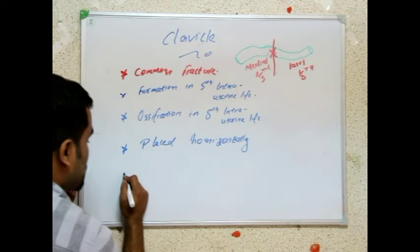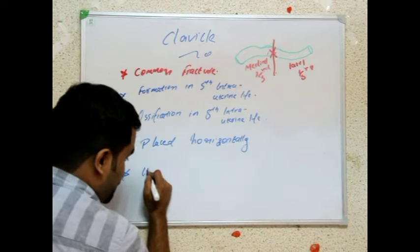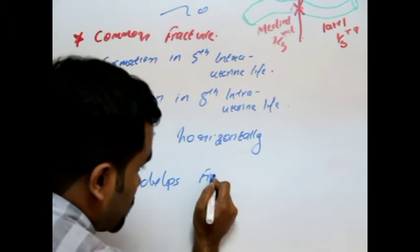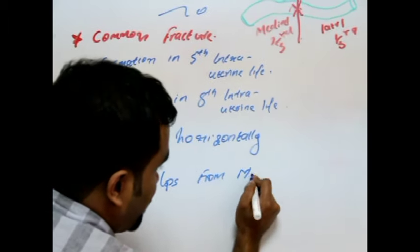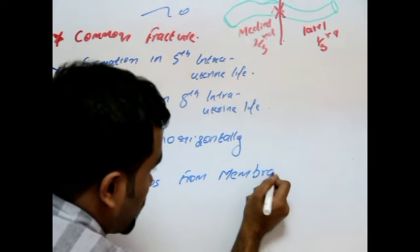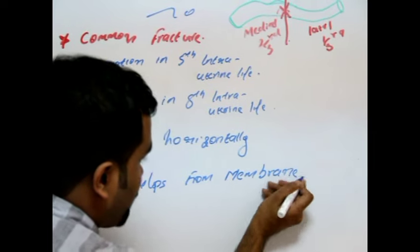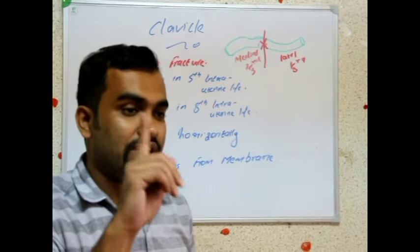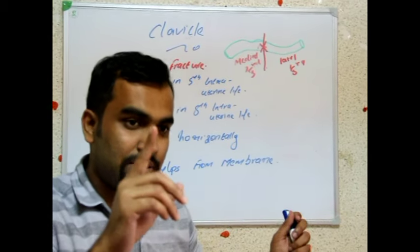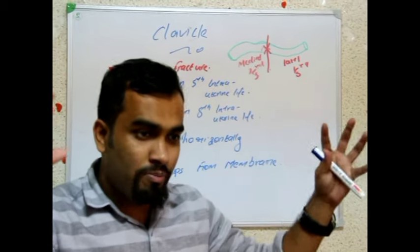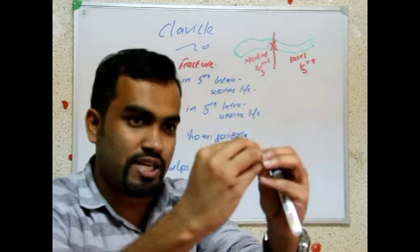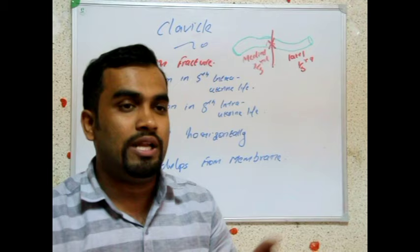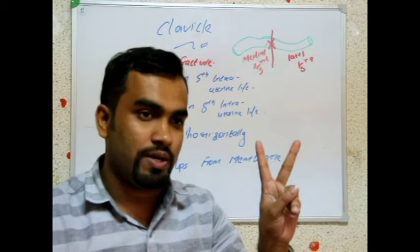Usually a bone will have only one ossification center — meaning the whole bone gets ossified from one center, getting strong. Clavicle is the only bone which has two ossification centers.